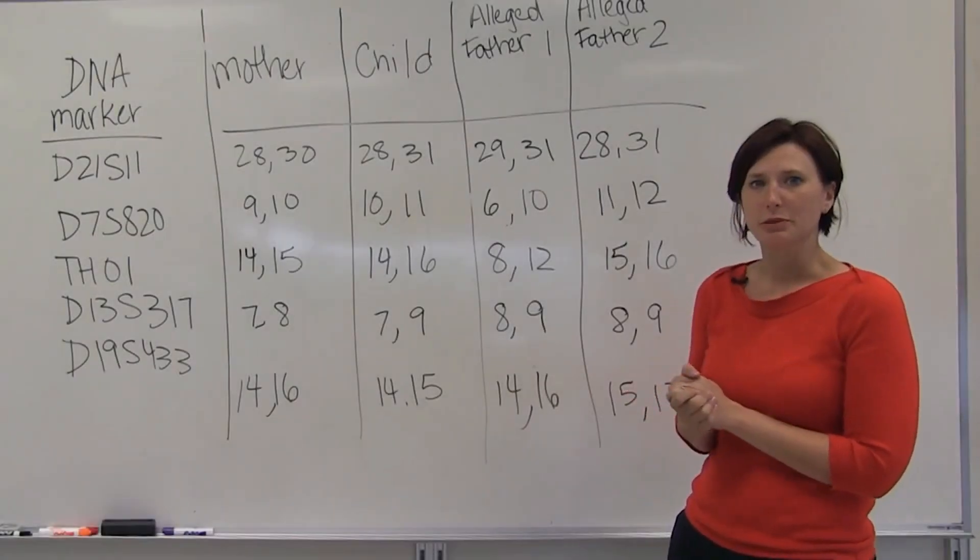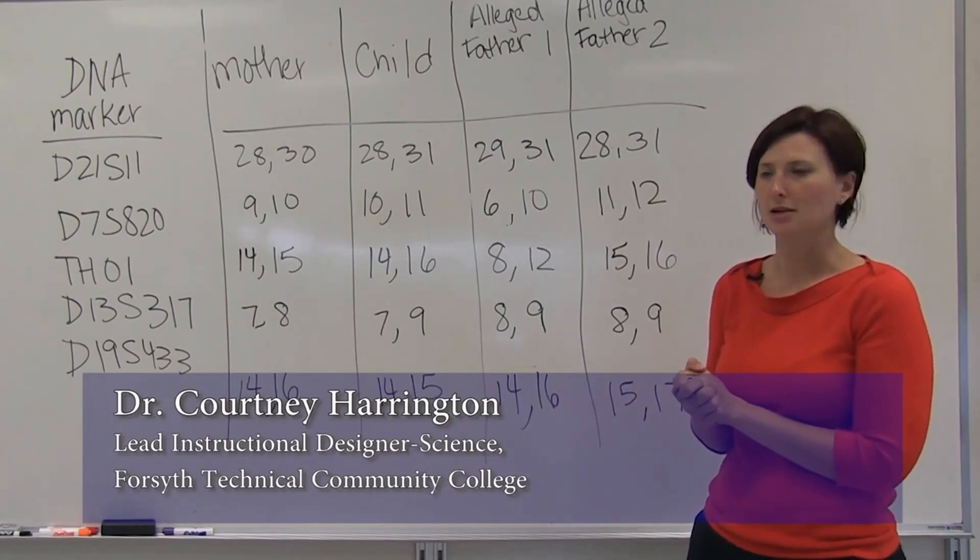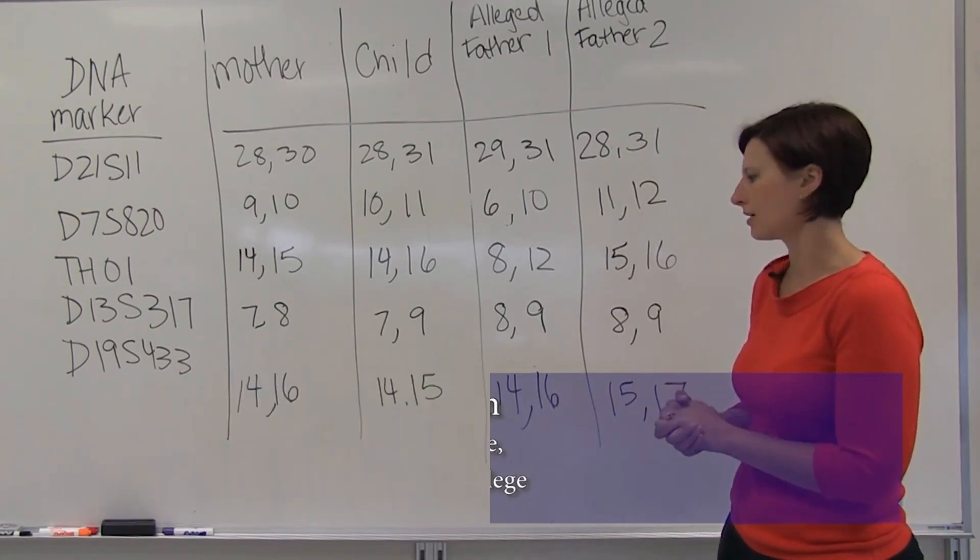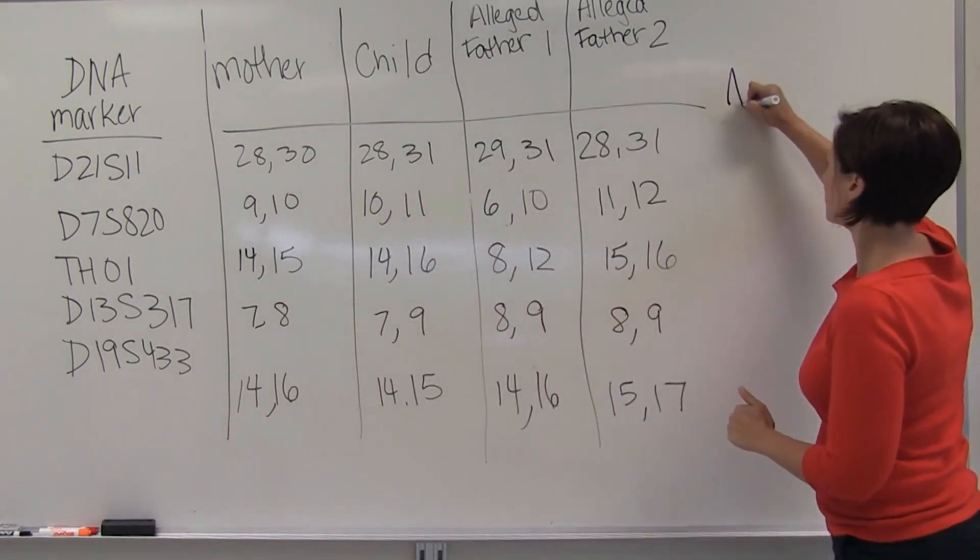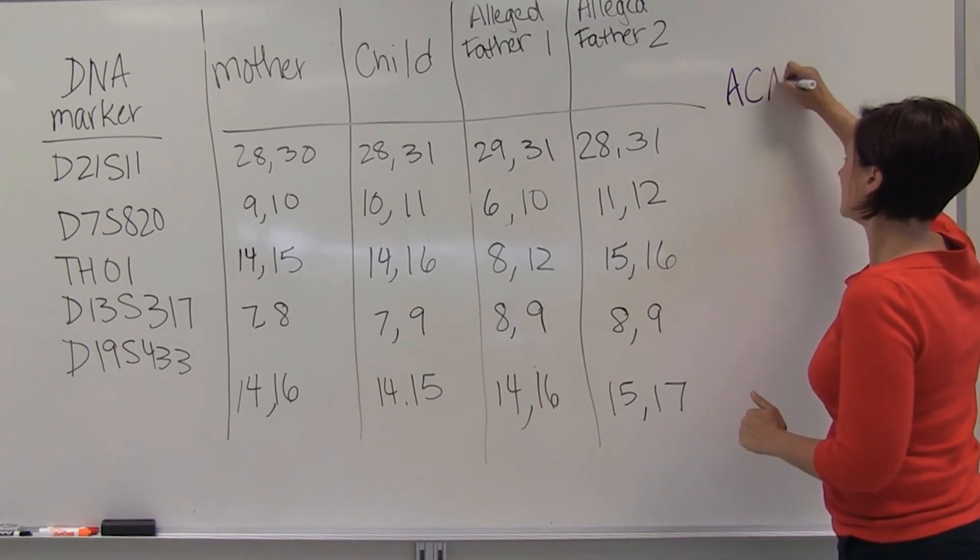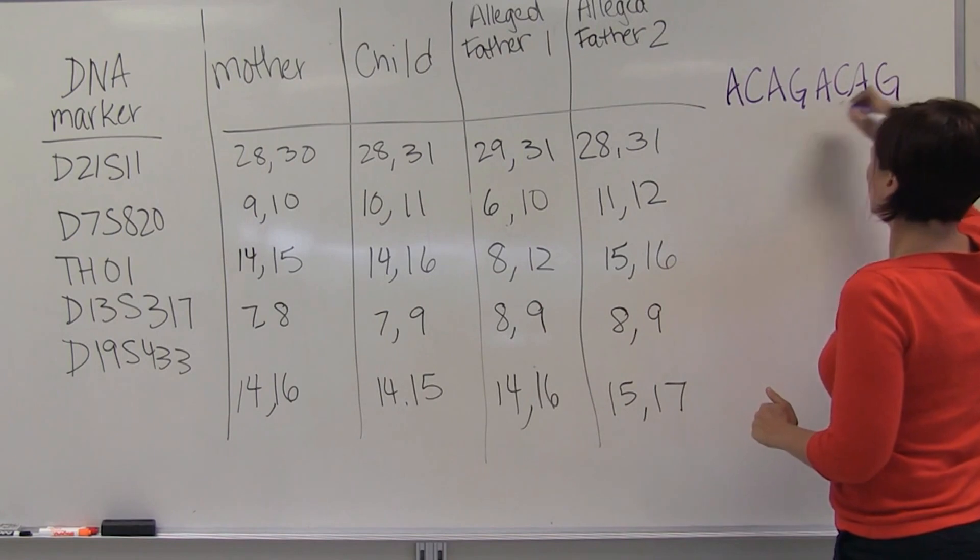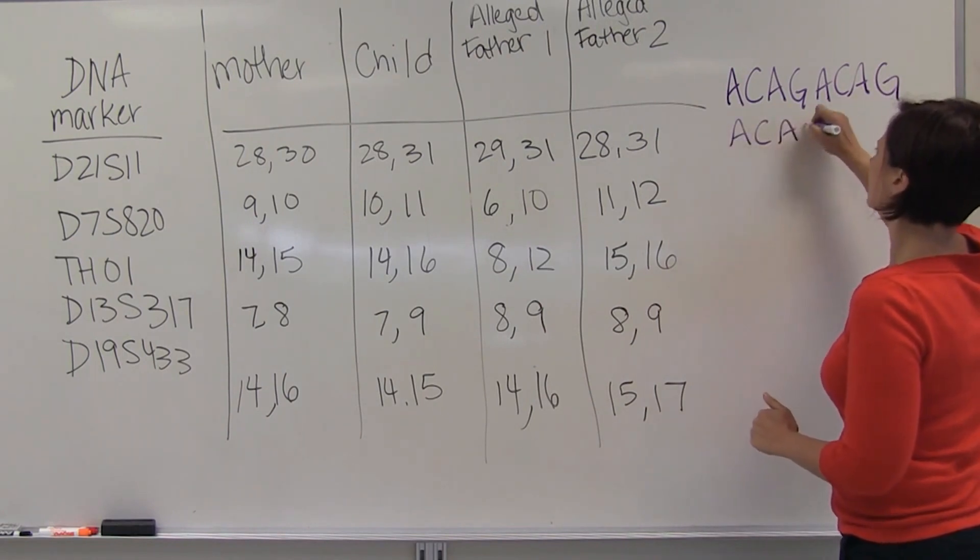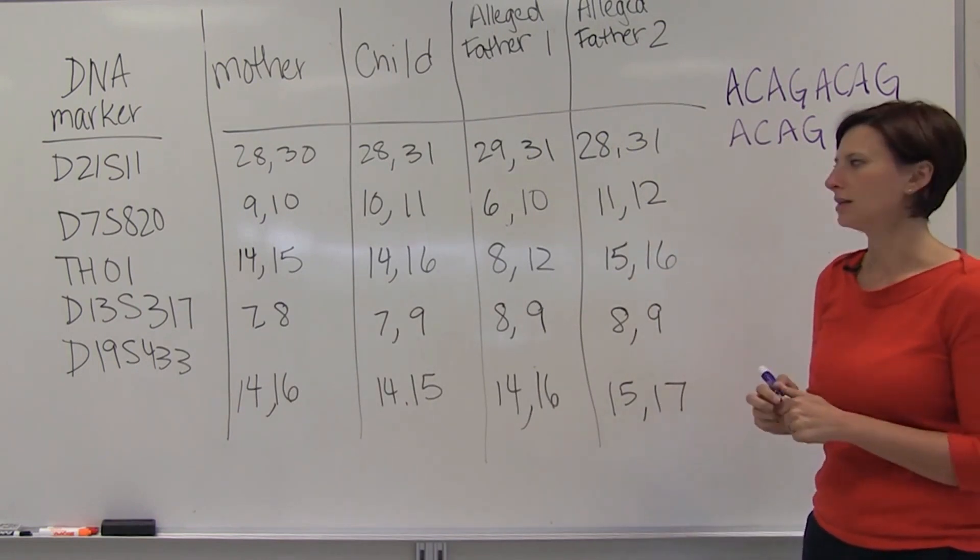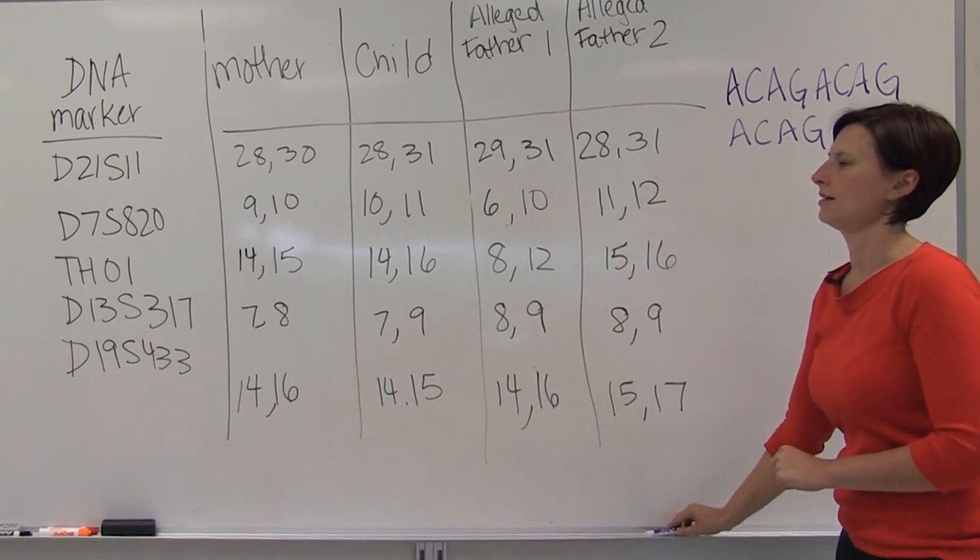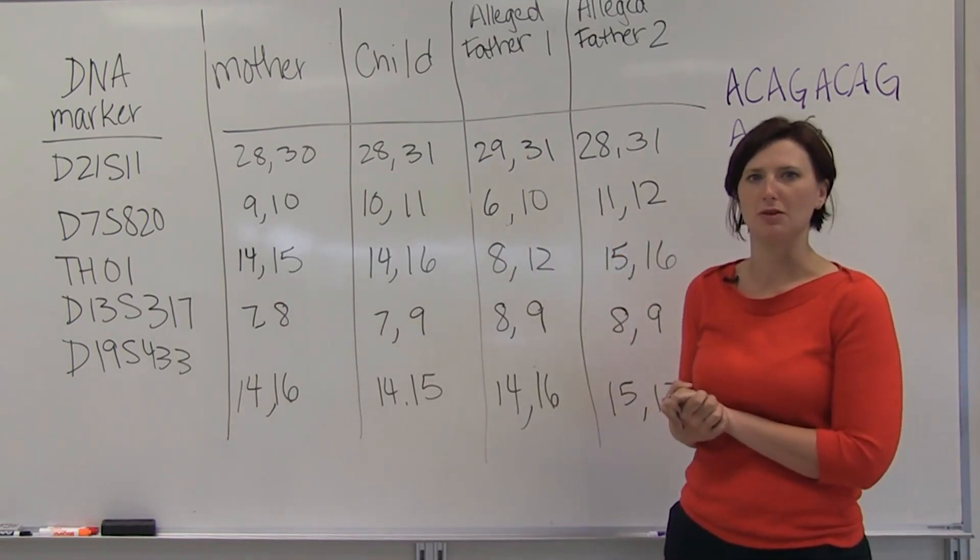DNA can also be used in paternity testing, and this utilizes short tandem repeat sections of the DNA where DNA repeats, for example ACAG ACAG ACAG and so on. The repeats at each loci are counted and then that's used in a matrix to determine whether or not someone can be the father of a child.